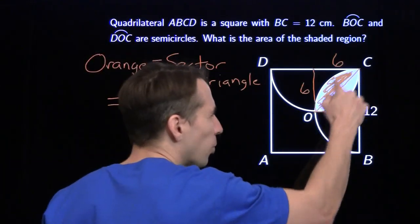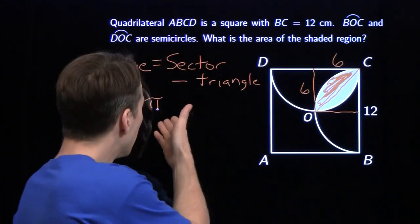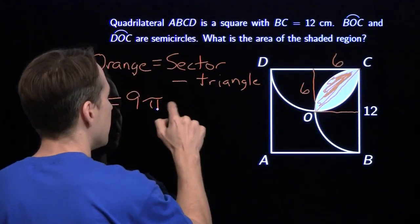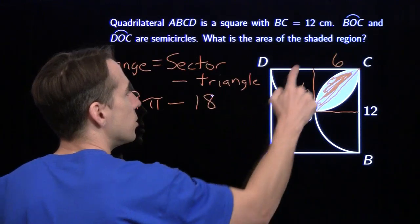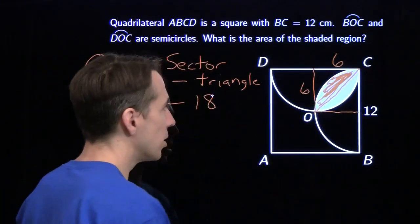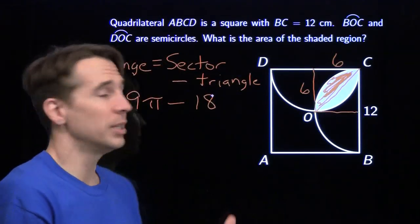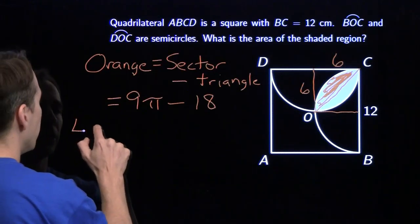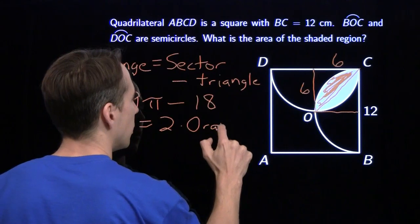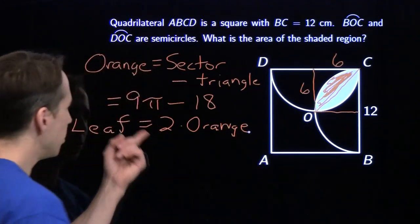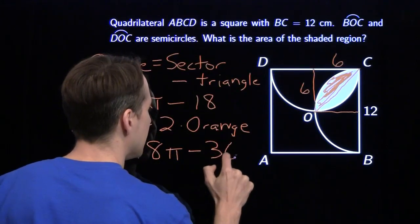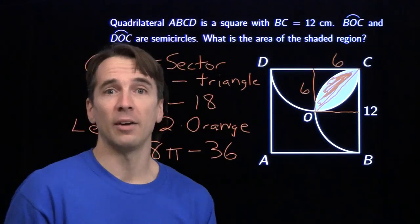The triangle is a right triangle. Each leg has length 6, so the area of the triangle is half the area of that little square. The little square has area 36, so each of those two right triangles has area 18. That's just one orange piece — the other piece is the same, so the leaf is double the orange. The leaf equals 2 times the orange: 2 times 9π gives 18π, minus 2 times 18 gives 36. And just like that, we have our answer.